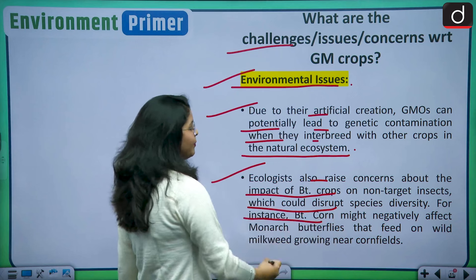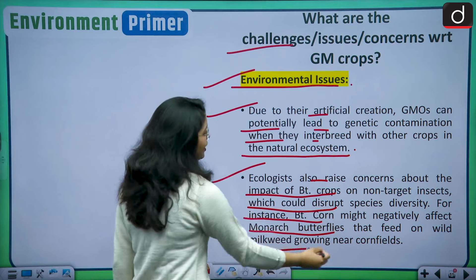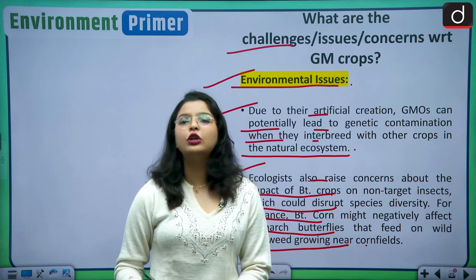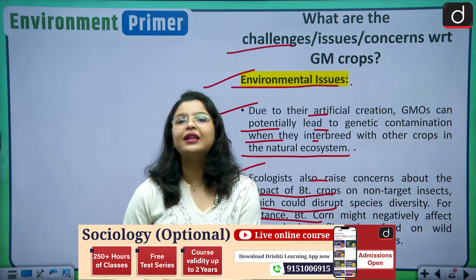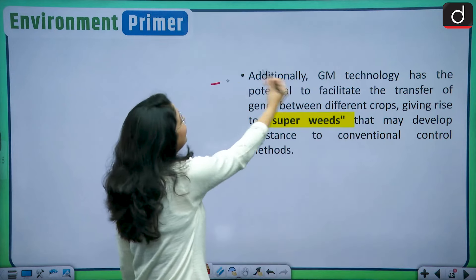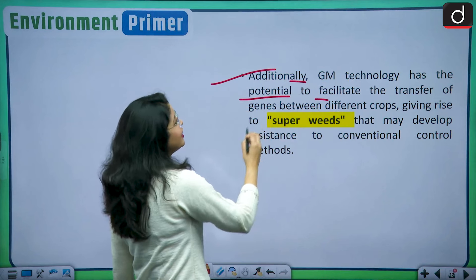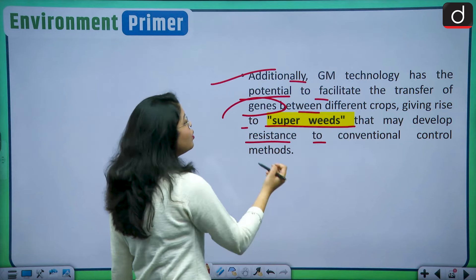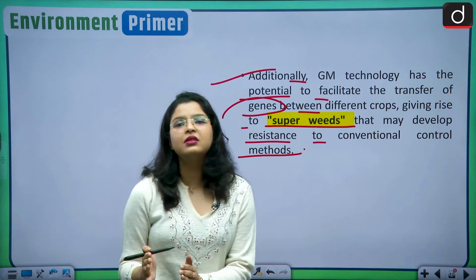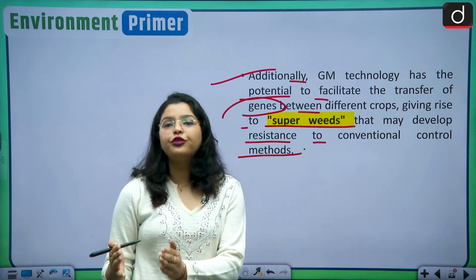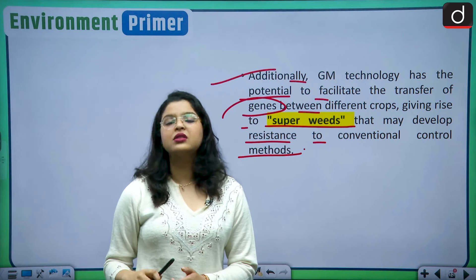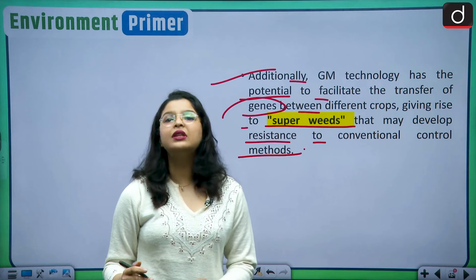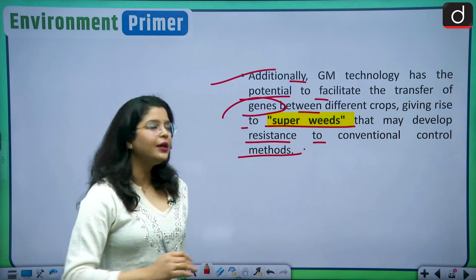For instance, BT corn might negatively affect monarch butterflies that feed on wild milkweed growing near cornfields. This issue was also raised in the case of GM mustard — that it is going to harm the natural production of honey by impacting honey bees. Additionally, GM technology has the potential to facilitate gene transfer between different crops, giving rise to super weeds that may develop resistance to conventional control methods — creating a disaster since they would be resistant to natural weed management techniques.